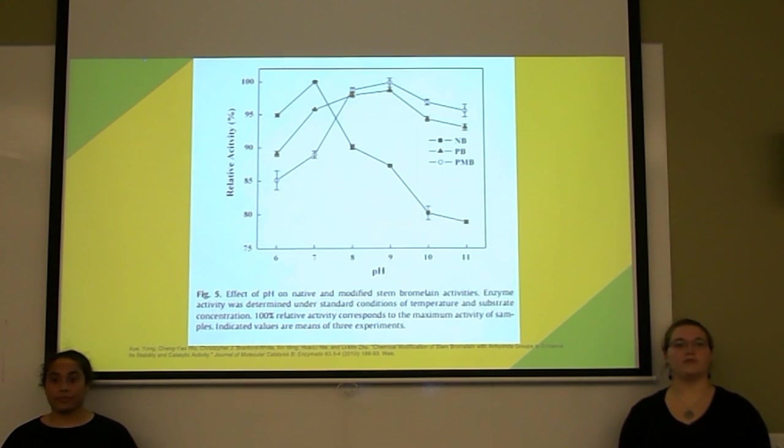The results of this experiment confirm the native pH of stem bromelain is 7. The pyromellitic anhydride (PA) is 8 and the polymaleic anhydride (PMA) is 9. This is significant because the native form of stem bromelain functions at an optimum pH of 7. The post-translational modifications cause it to function at higher levels of pH, so it causes it to function in more basic conditions.